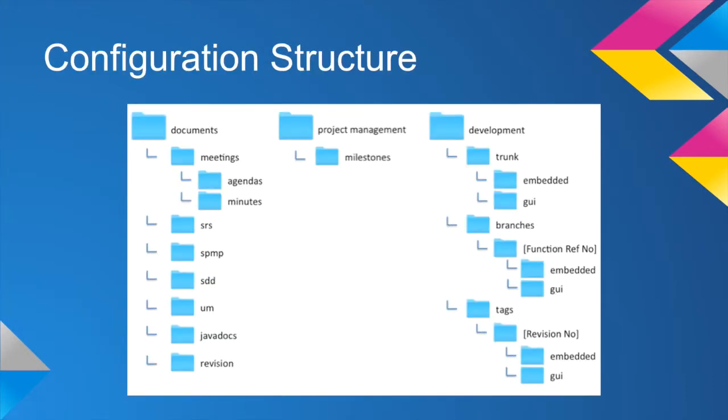This is the configuration structure. There are three main categories: Documents, Project Management, and Development.